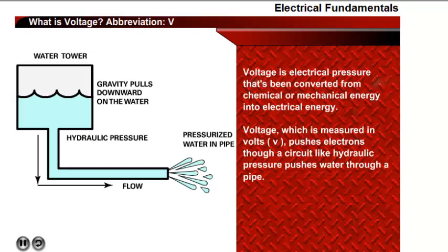For example, a battery and an alternator provide electrical pressure. The higher the voltage, the greater the electrical pressure.